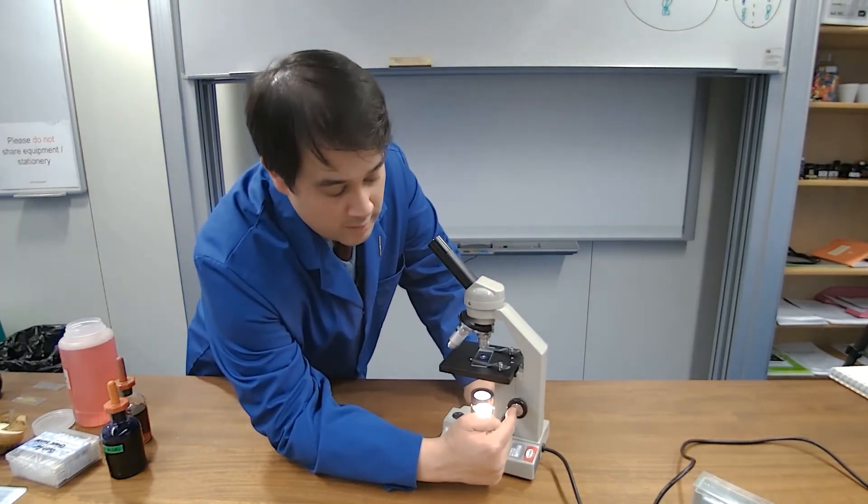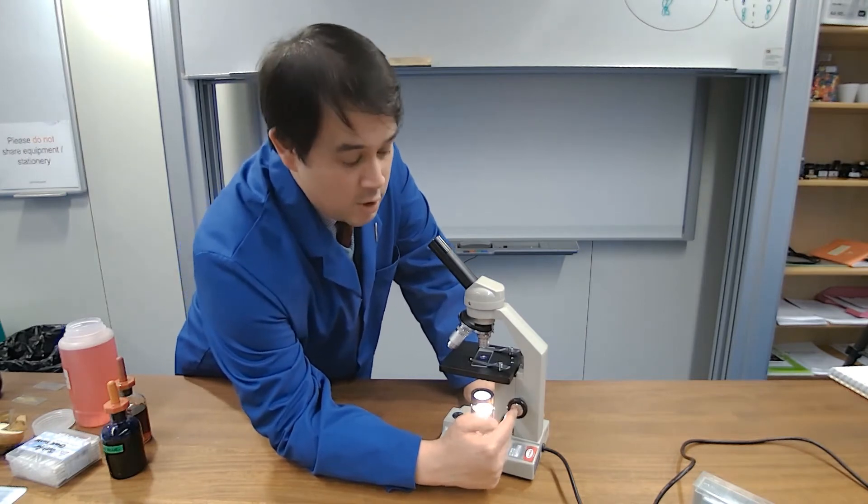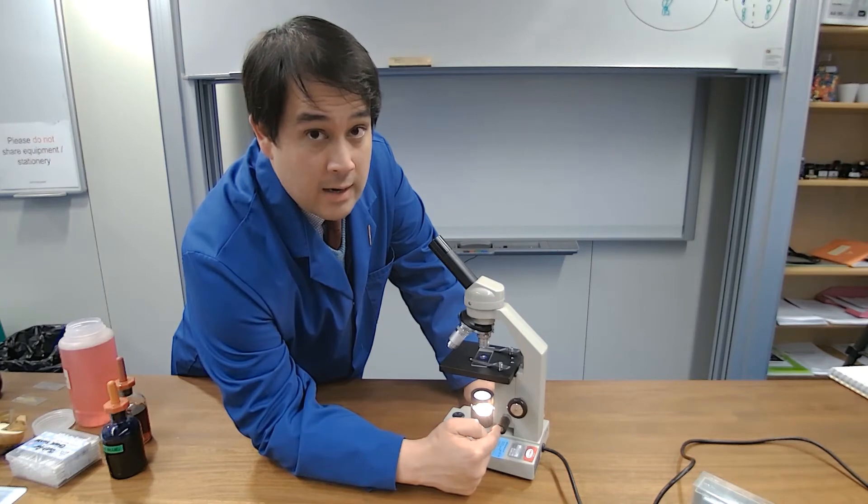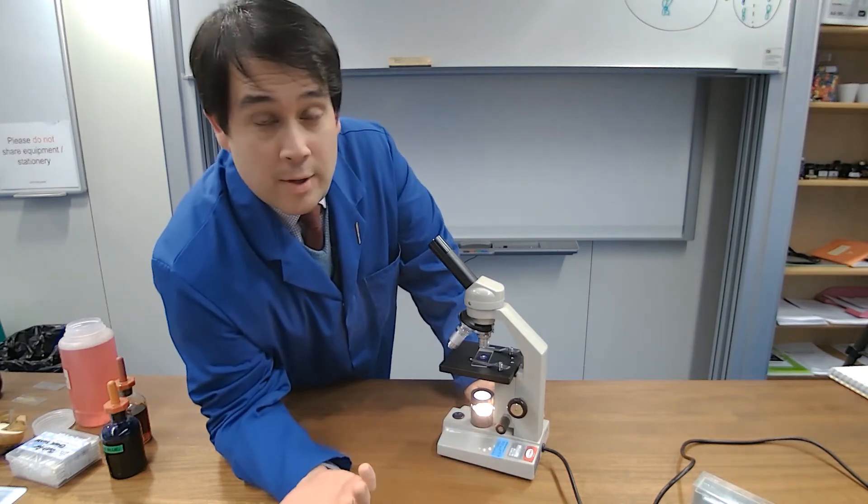We do that by lowering using the coarse adjustment knob and then once we start to see an image we then use the fine adjustment knob to get a nice focus on there. Once that is done you can then draw your image and have a look.